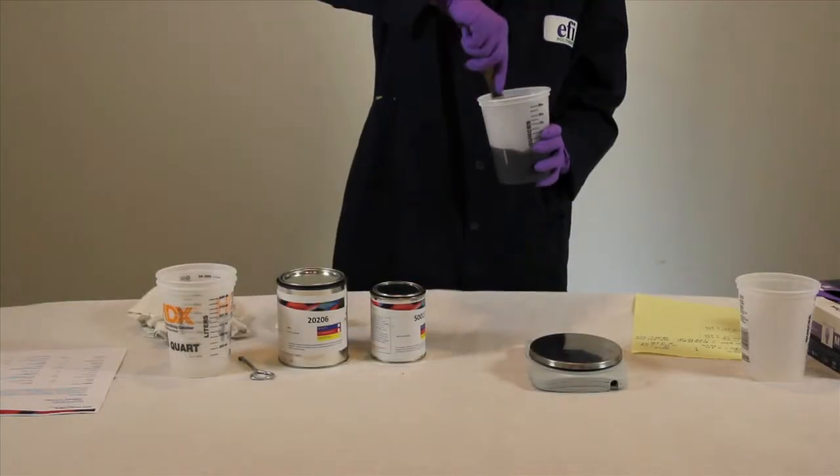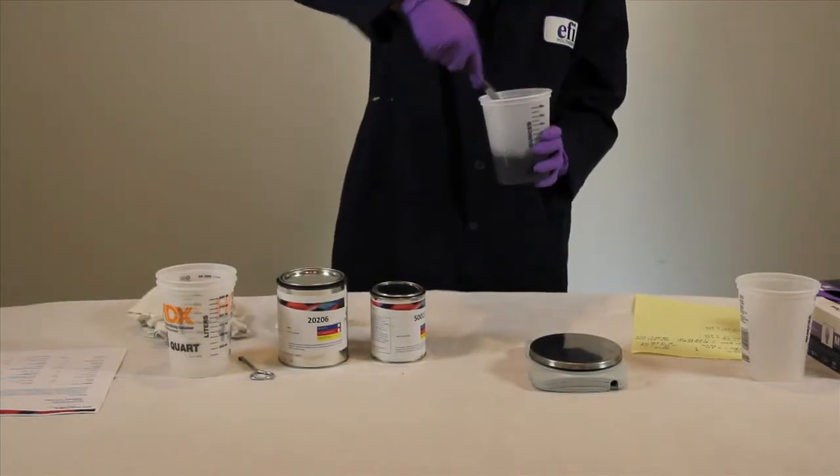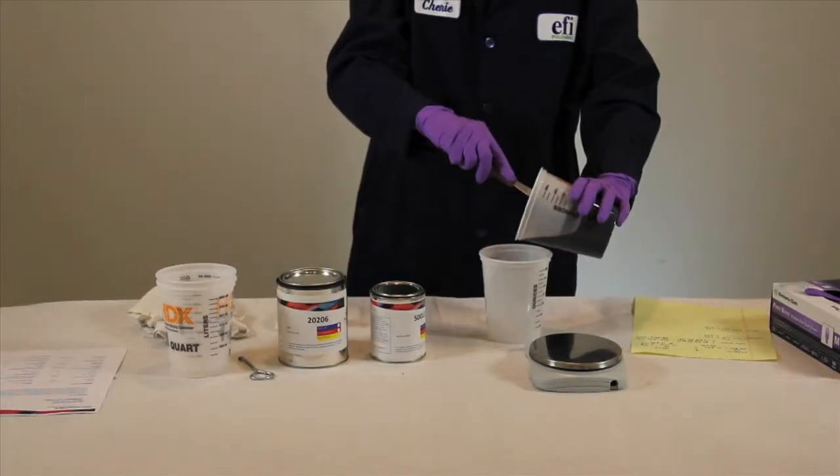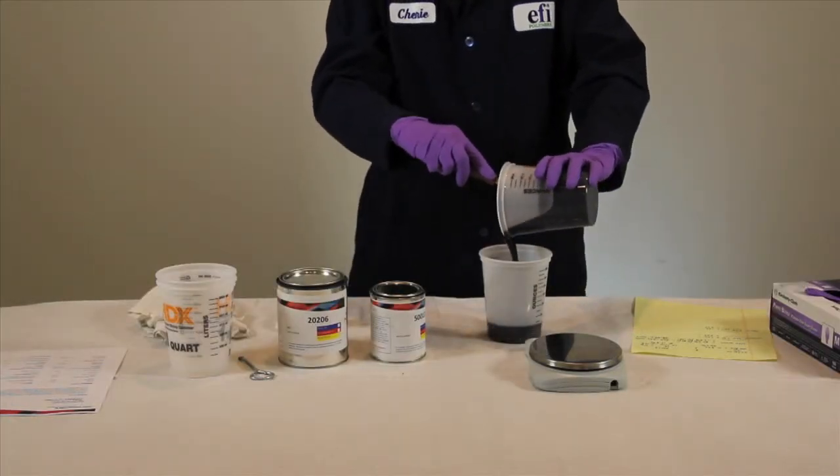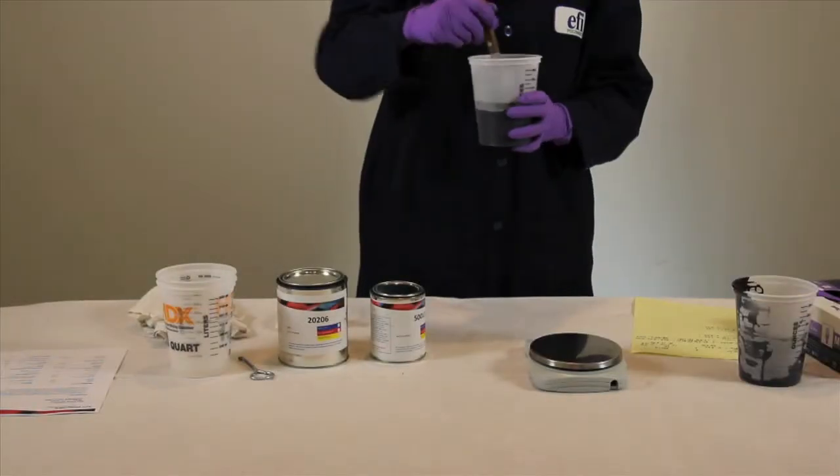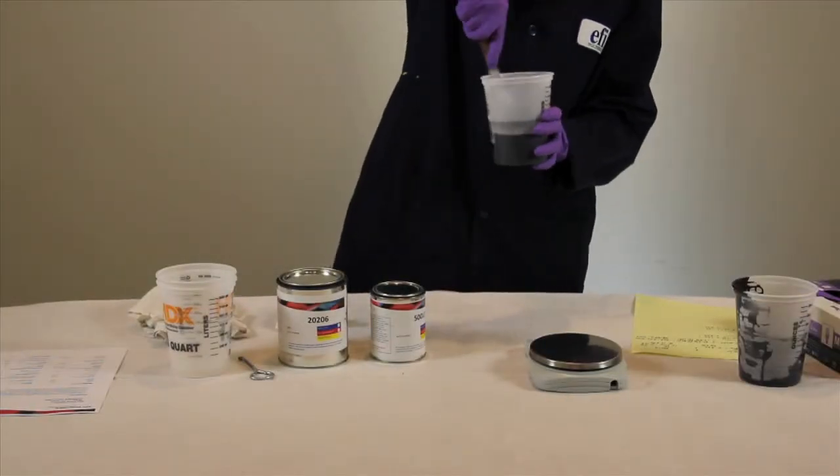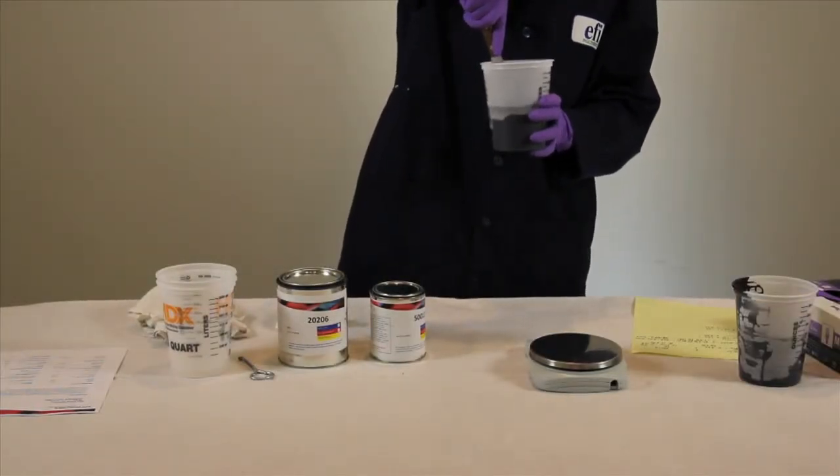Mix the materials for one minute, being sure to scrape the sides and bottom. Next, pour this material into a second cup. This ensures that no unmixed material trapped in the corners or sides of the cup will be added to your part.